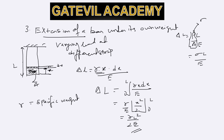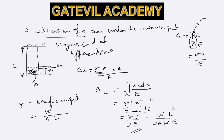This is the elongation of the bar under its own weight. The specific weight gamma is weight per unit volume — if W is the total weight, then gamma equals W divided by (A times L). Substituting, delta L equals W L by (2 A E). So these two expressions — gamma L squared by 2E, and WL by 2AE — represent the elongation of a bar under its own weight. That's it for now; we'll meet in the next class.